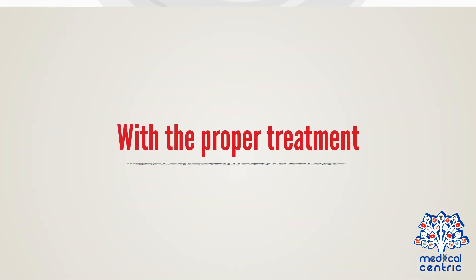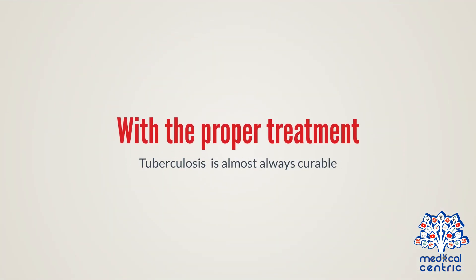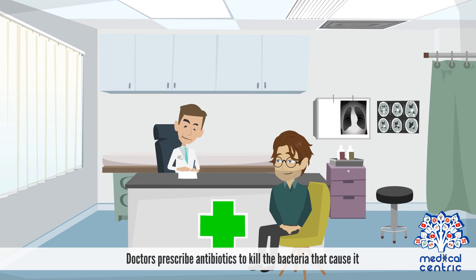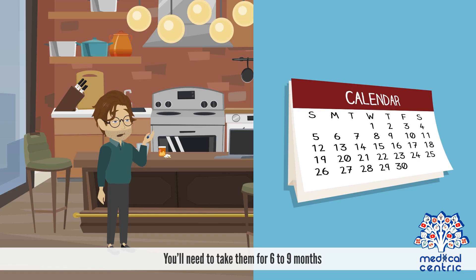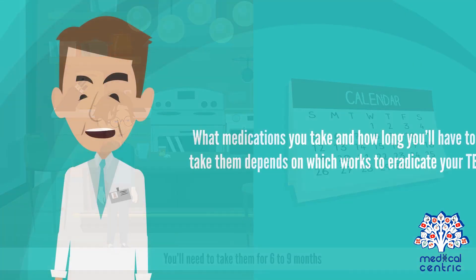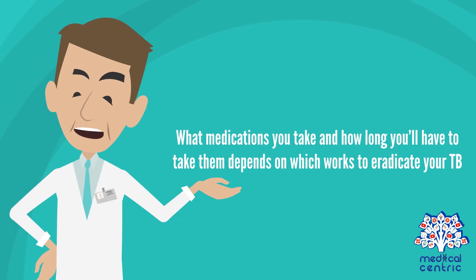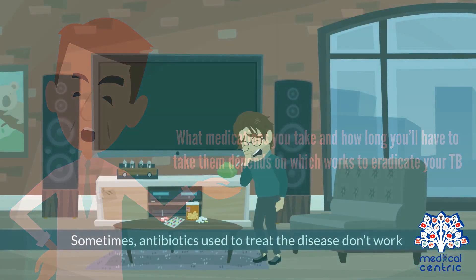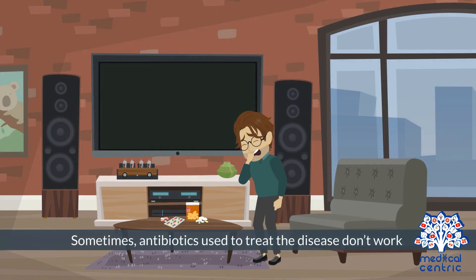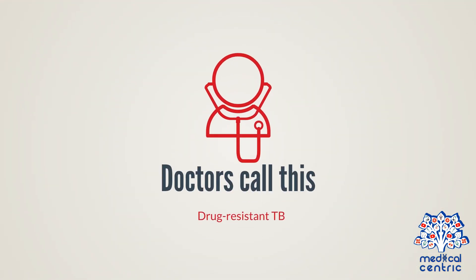Treatment: With the proper treatment, tuberculosis is almost always curable. Doctors prescribe antibiotics to kill the bacteria that cause it, and you'll need to take them for six to nine months. What medications you take depends on which works to eradicate your TB. Sometimes antibiotics don't work — doctors call this drug-resistant TB.